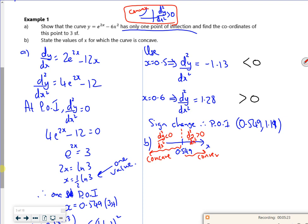So it says state the values of x for which the curve is concave, so it's going to be x belongs to the reals such that x is less than 0.549. There.